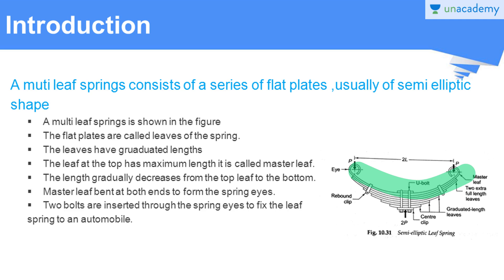The master leaf is bent at both ends to form the spring eyes. The bent portions of the master leaf are called spring eyes. Two bolts are inserted through the spring eyes to fix the leaf spring to an automobile. We use these spring eyes as a fixing joint for this multi-leaf spring in any application.